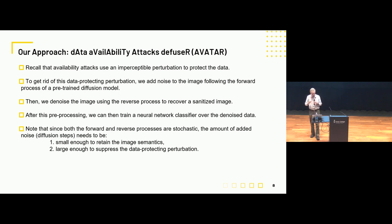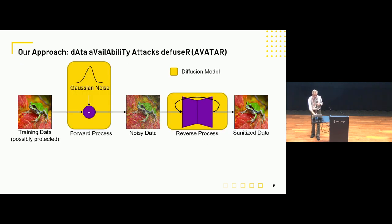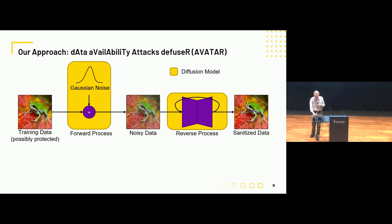Avatar is not specific to a particular model you're trying to learn or a particular type of adversarial perturbation. The amount of noise — the number of diffusion steps — needs to be carefully set: small enough to retain image semantics whilst being large enough to suppress the data perturbation mechanism. We take an image, add Gaussian noise in the forward process, run the reverse diffusion process, and get sanitised data that should be cleaned up and no longer protected.